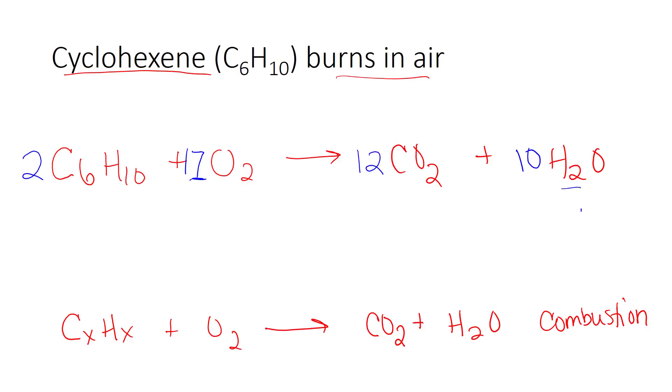Another approach you can use if you're not quite comfortable with doubling this number is you can always go back and put a 2 in front of your hydrocarbon or your carbon and hydrogen compound. That will change your number of hydrogens, usually making it even. And then you can always come back to your product side and make that oxygen even as well.